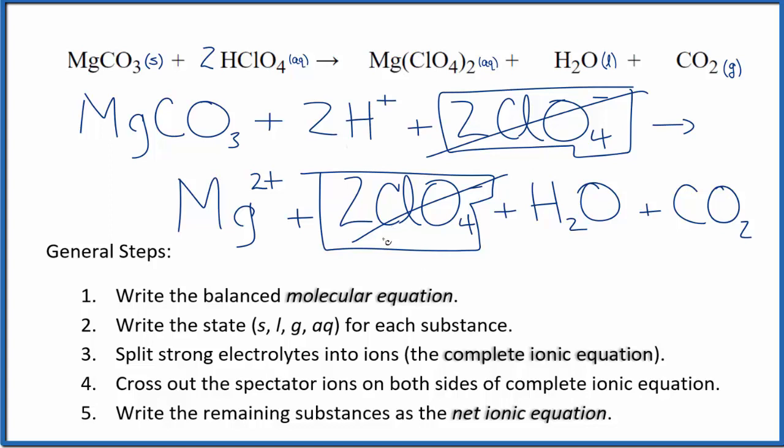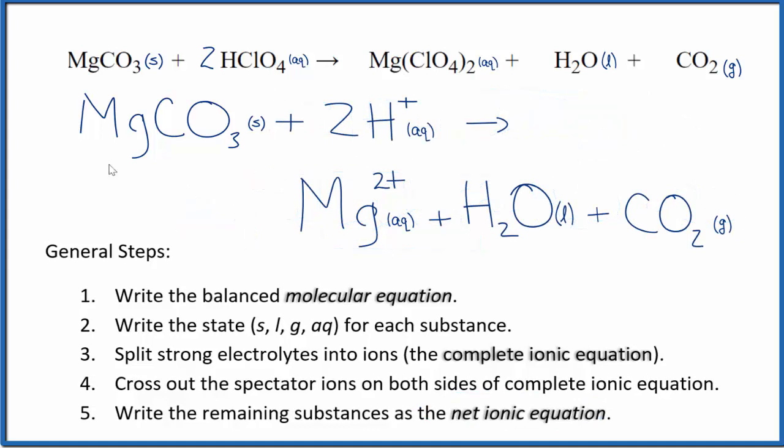Everything else is unique, so this is the net ionic equation for MgCO3 plus HClO4. I'll clean this up and write the states. So this is the balanced net ionic equation for the magnesium carbonate and the perchloric acid.